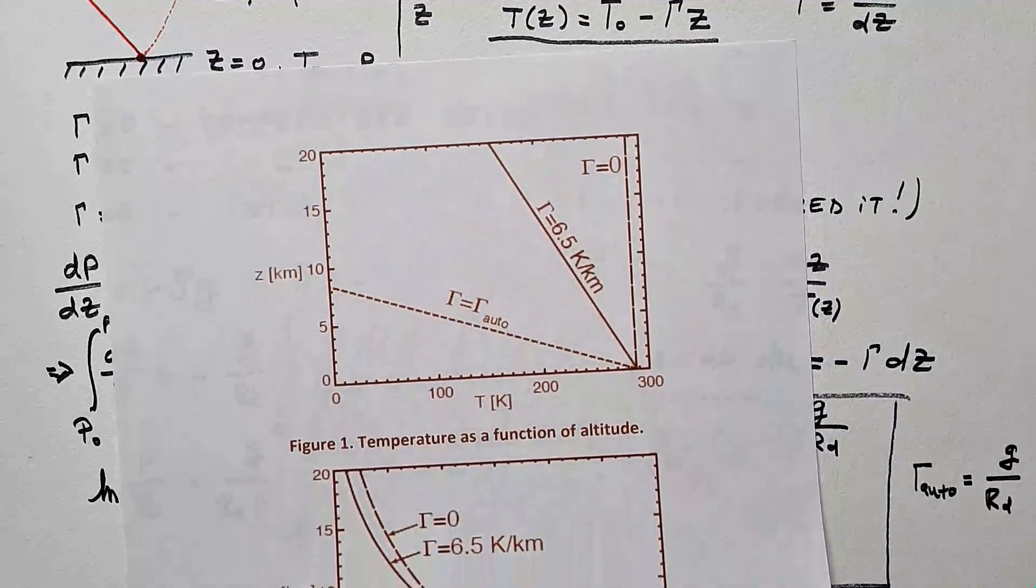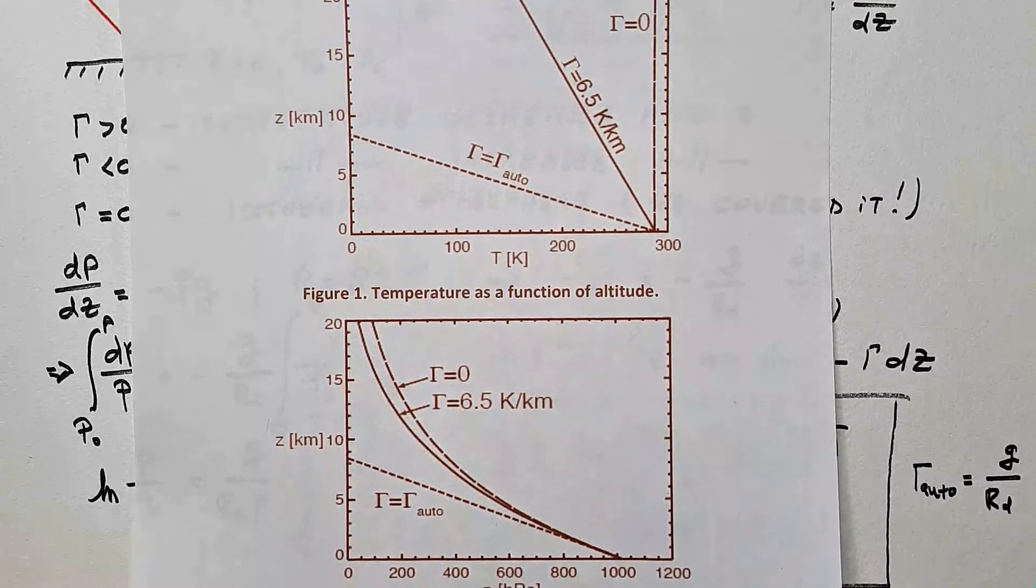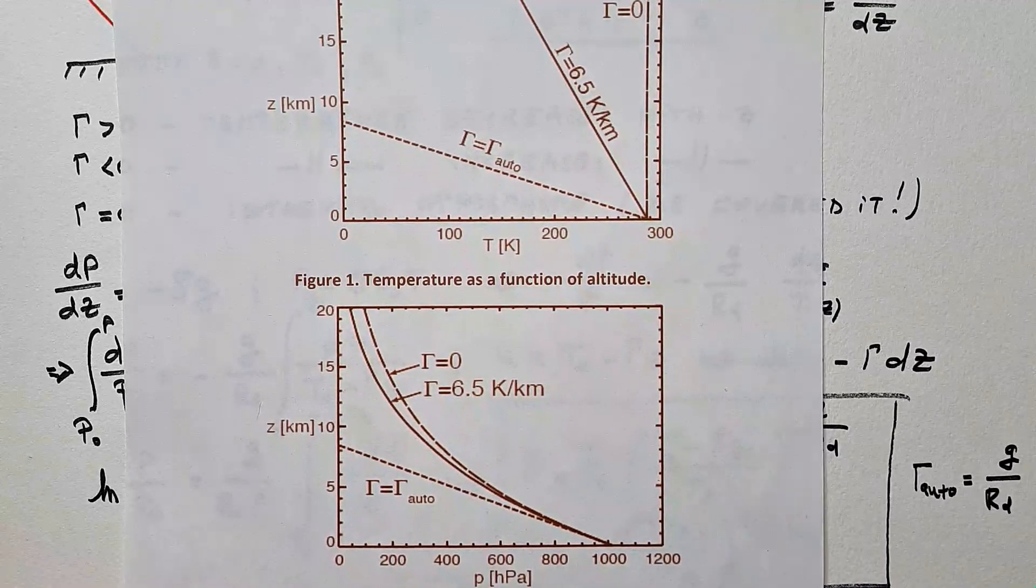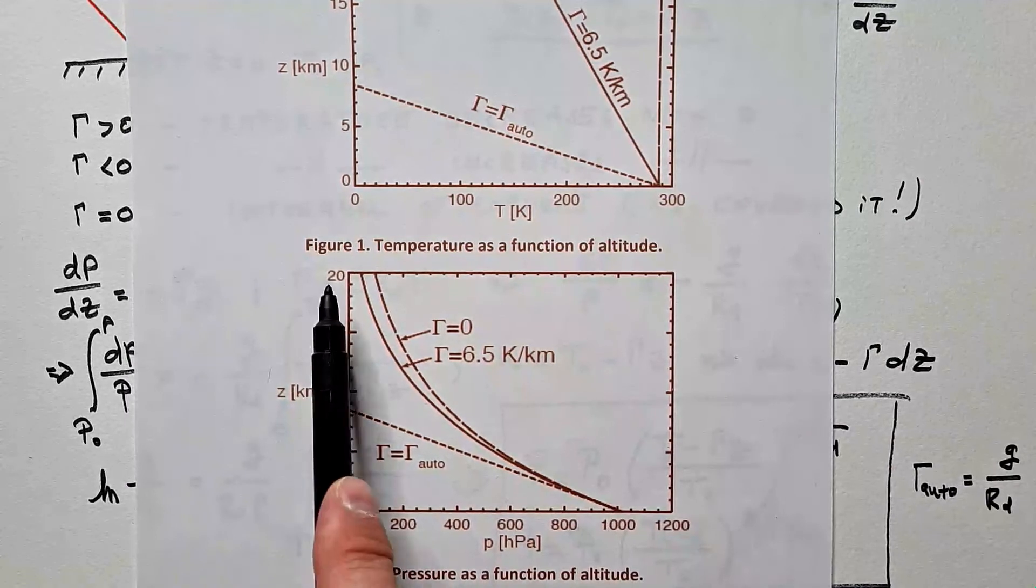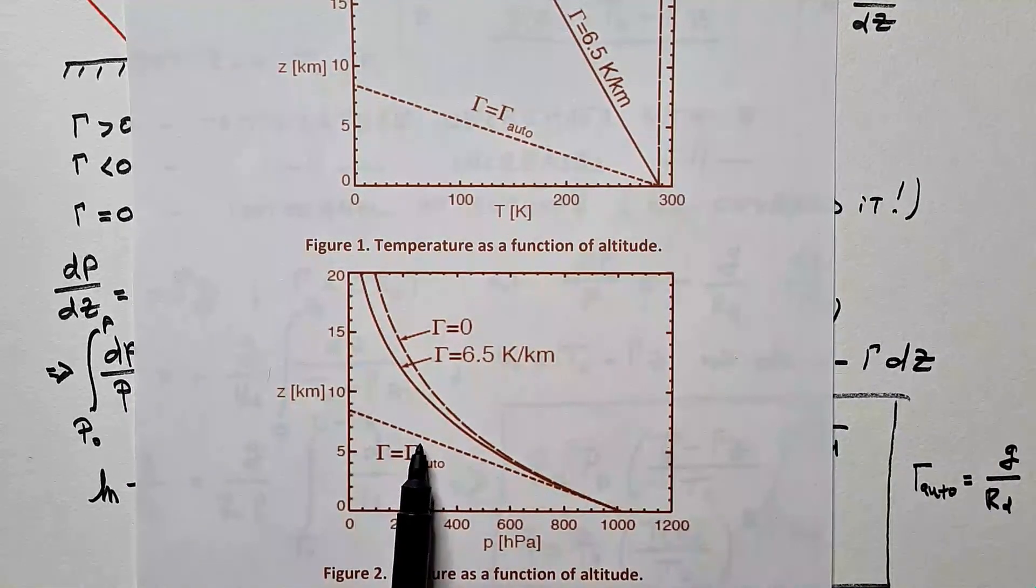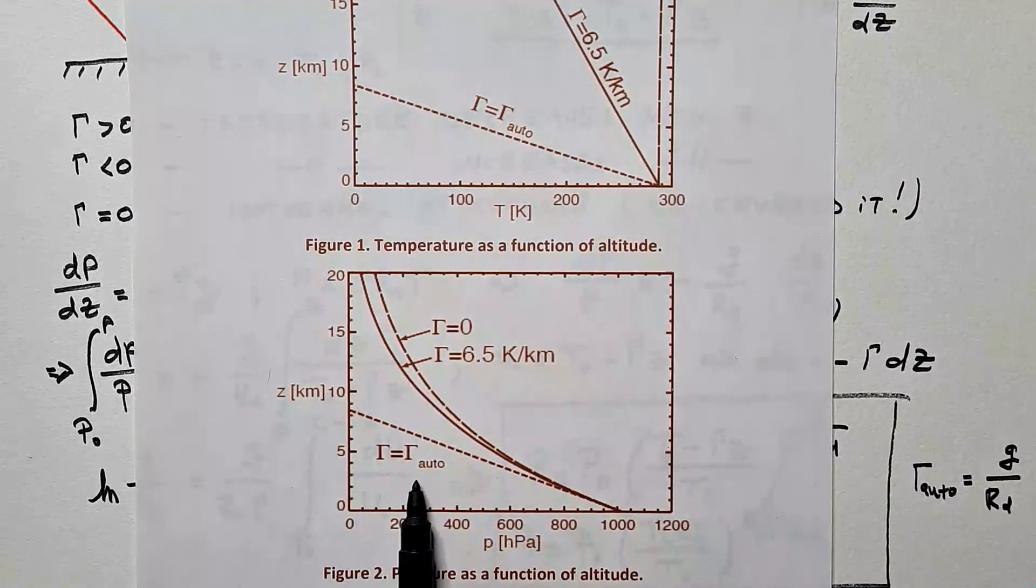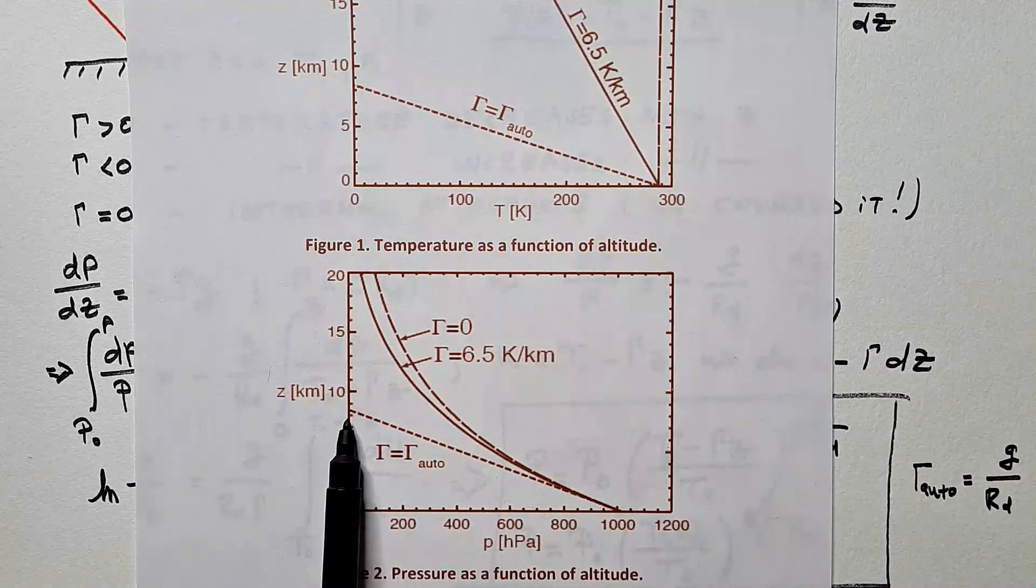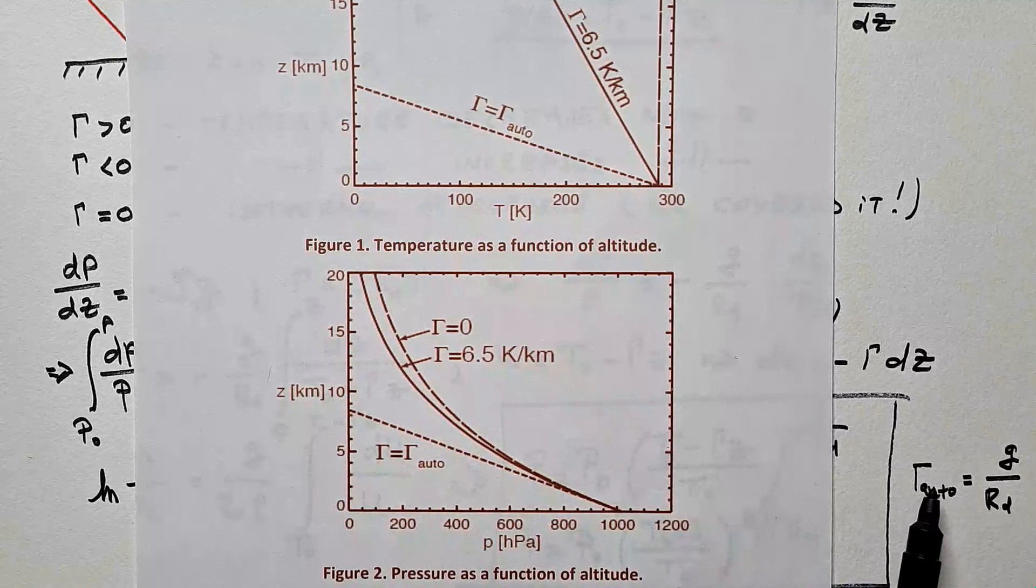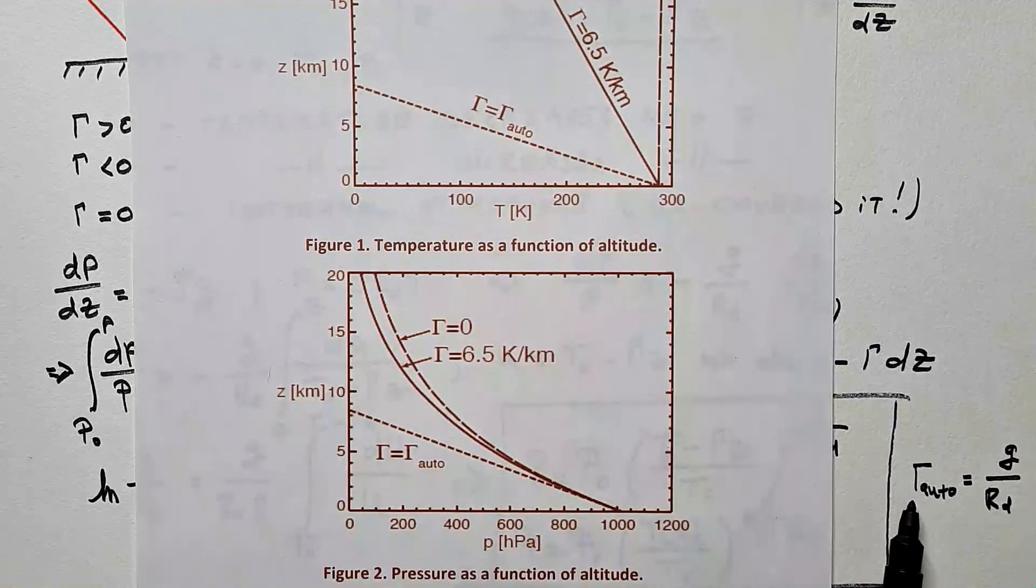But more importantly, when we combine this figure with our knowledge how pressure changes with height, pressure versus height, you will see that if atmosphere is autoconvective, pressure linearly decreases with height. And that's what I discussed here when I introduced γ_auto.